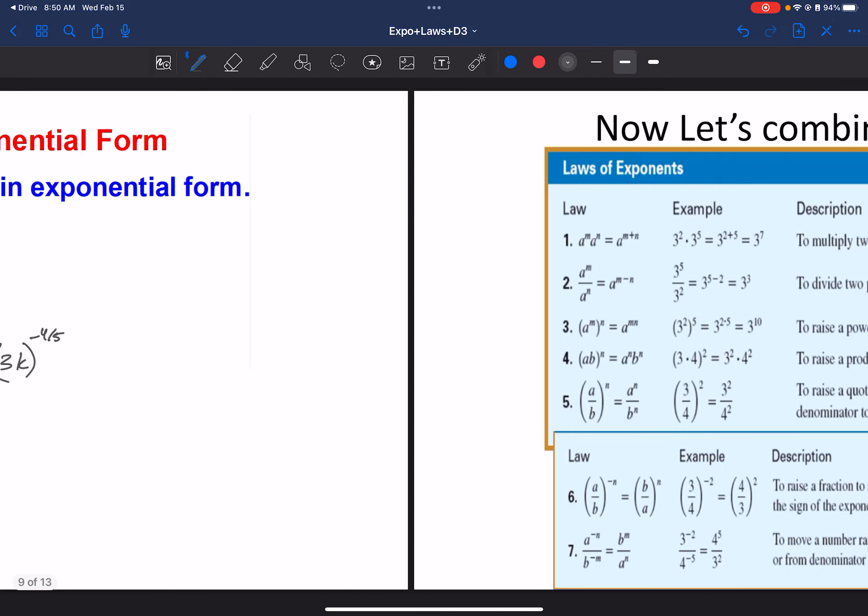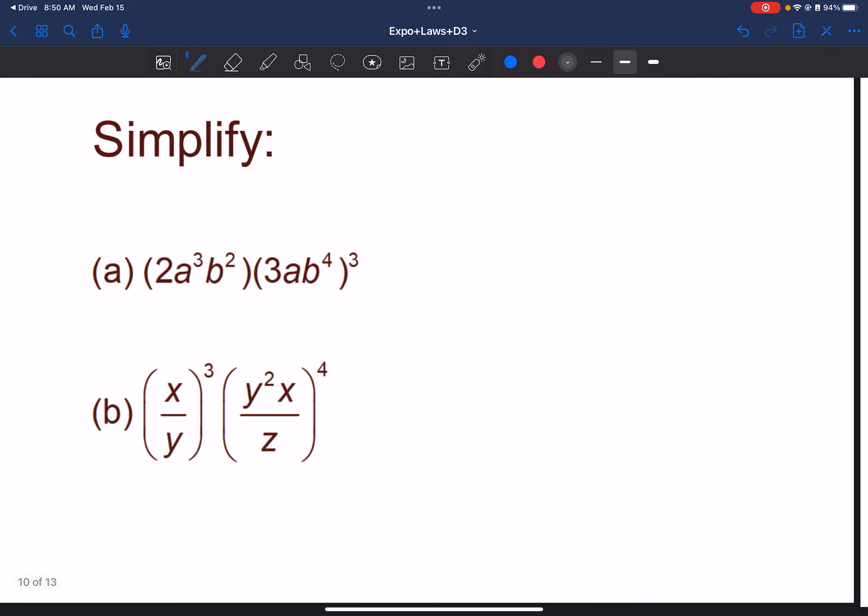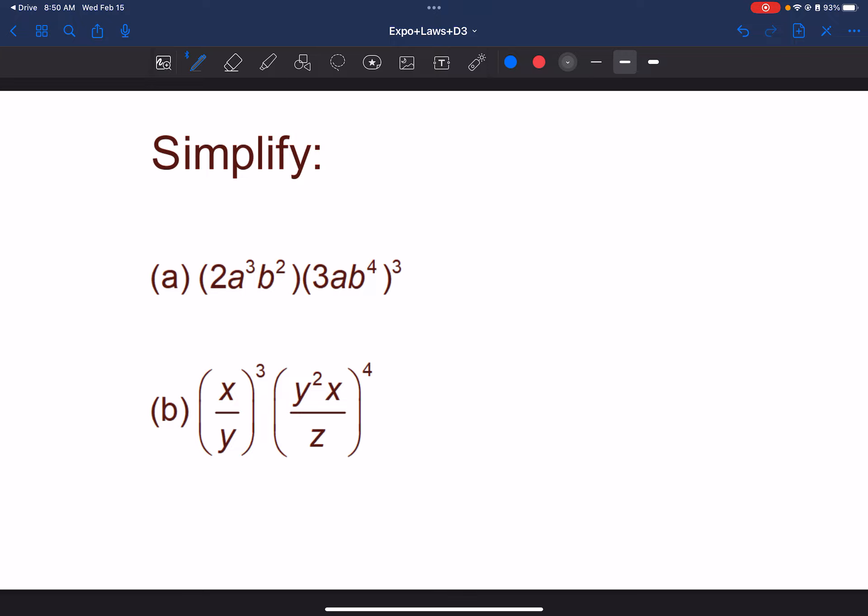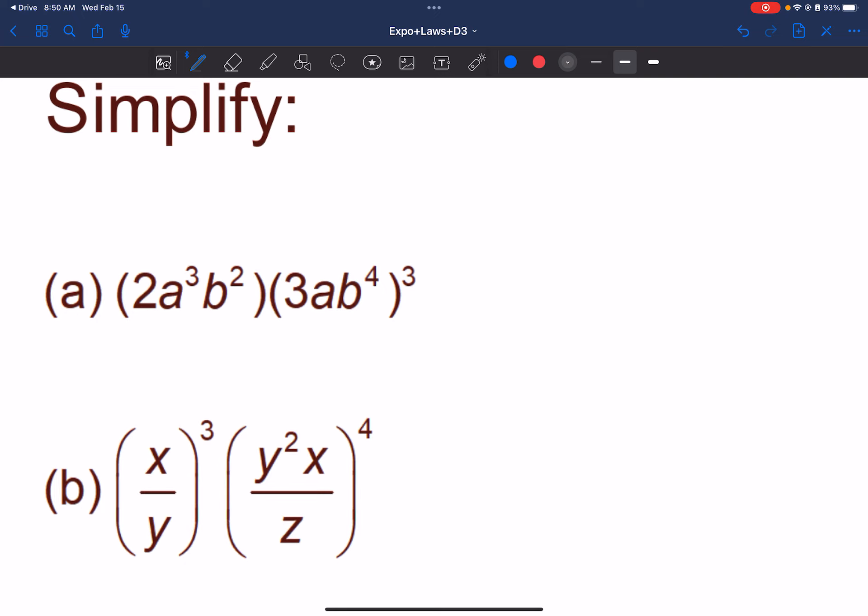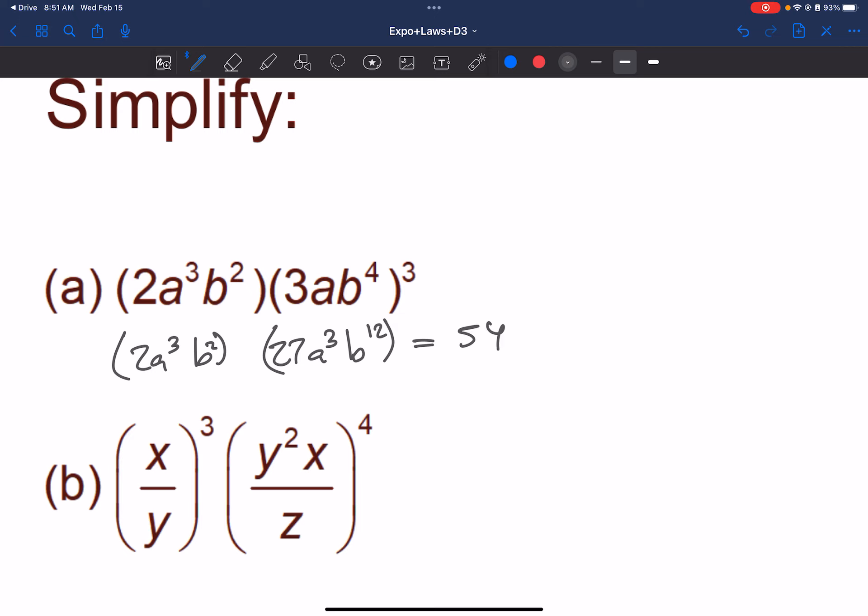All right. Now, combining all the rules, we have some examples here. Let's go over these really quick, even though they don't really involve radicals. This first one here, what we deal with is we deal with this set of parentheses first because of that cube. So cubing all this, we would have 3 cubed, so 27, a to the 3rd, b to the 12th. And then over here, we'd have 2a to the 3rd, b squared. Multiplying those together, we'd have 54, a to the 6th, b to the 14th.